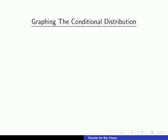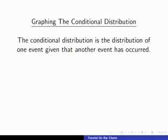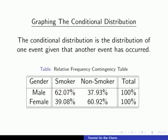By graphing our relative frequency contingency table we have shown the joint distribution of smoking status and gender. But it's also possible to use clustered and segmented bar charts to show the conditional distribution. Recall that the conditional distribution is the distribution of one event given that another has occurred. Here we'll look at the case where we find the distribution of smoking status conditioning on gender, using the corresponding table of values.